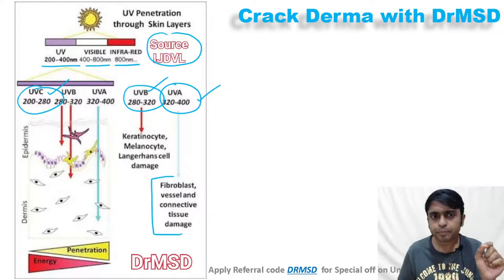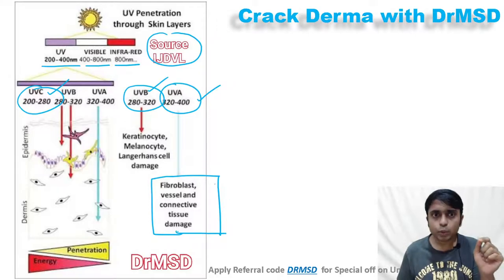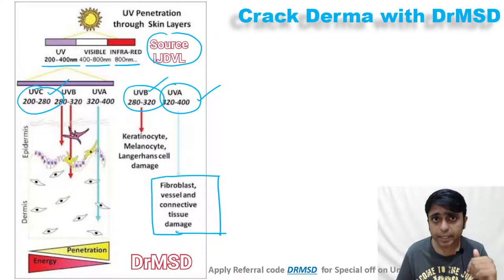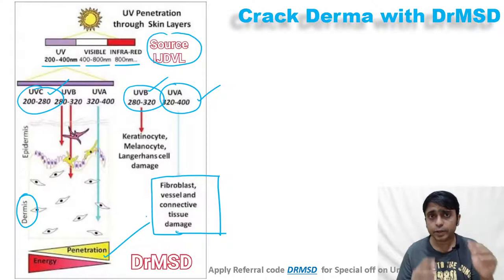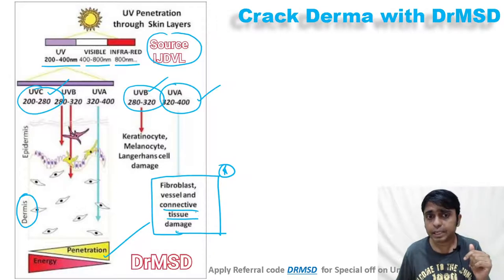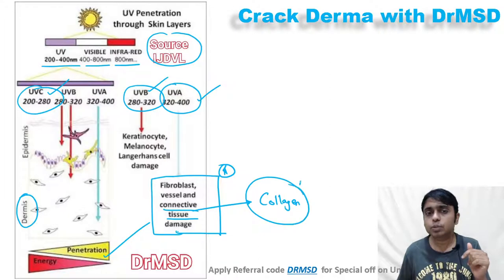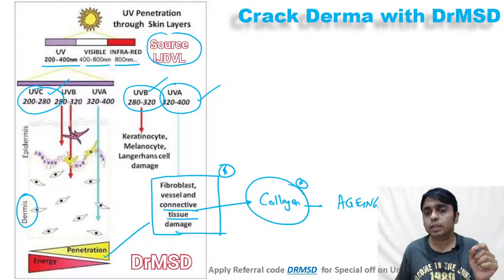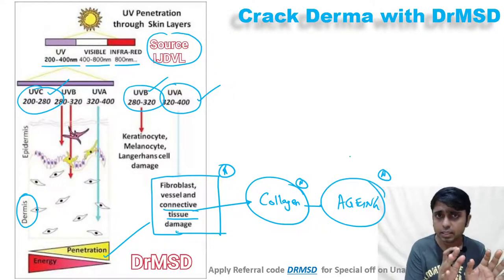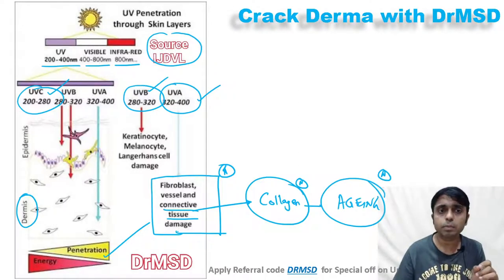One important point: UVA rays penetrate deeper into the skin, up to the dermis level. As the energy reduces, the penetration of the rays into the skin increases. These UVA rays penetrate and cause damage to the connective tissue. One component of connective tissue is collagen, so ultraviolet A radiation causes aging.